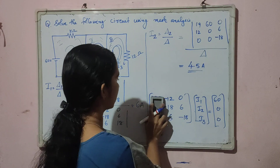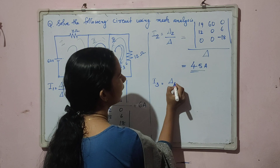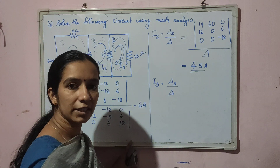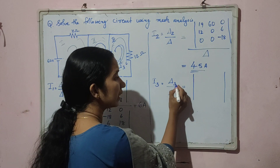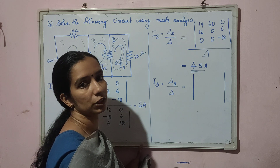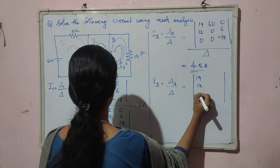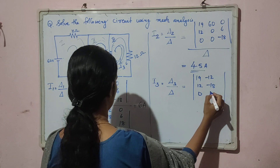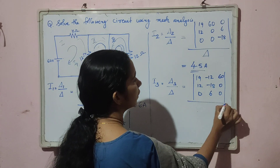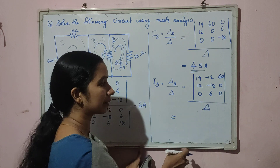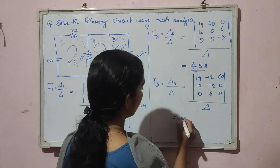For I3, we use I3 = Δ3 / Δ, where Δ3 is the determinant of the matrix obtained by replacing the third column of the resistance matrix with the voltage matrix. The resulting matrix has first two columns as [19, 12, 0] and [−12, −18, 6], and the third column replaced by [60, 0, 0]. Solving gives I3 = 1.5 amperes.